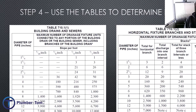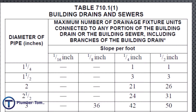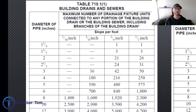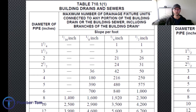Let's have a closer look at the tables. Table 710.1(1) for building drains and sewers is used specifically for those horizontal drains that are the main drains for the building. When using it, we also need to be aware of slope. Across the top of the table are columns for different grades: sixteenth inch per foot, eighth inch per foot, quarter inch per foot, and half inch per foot. For smaller pipe sizes, sixteenth or eighth inch per foot slope is not even an option. So, for example, if we're using quarter inch per foot slope on our building drain, we use that column and cross-reference our drainage fixture units to find the required pipe size.